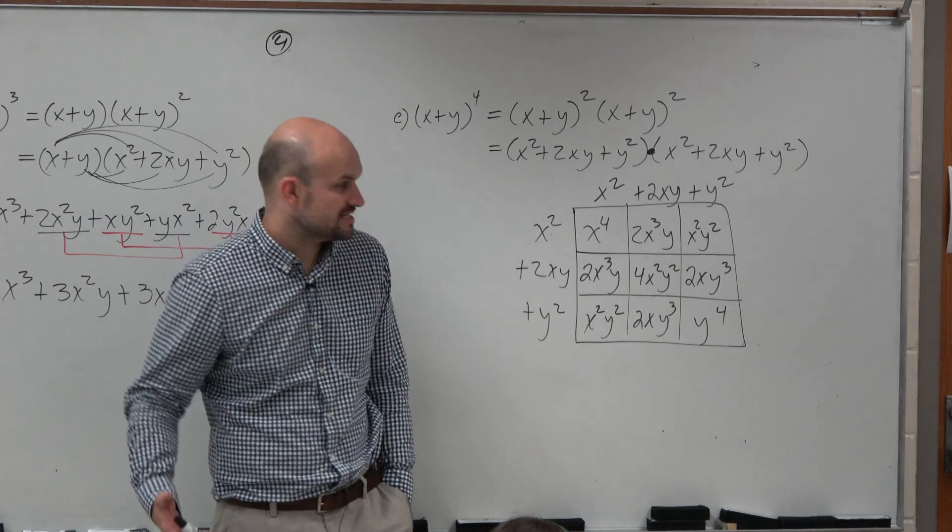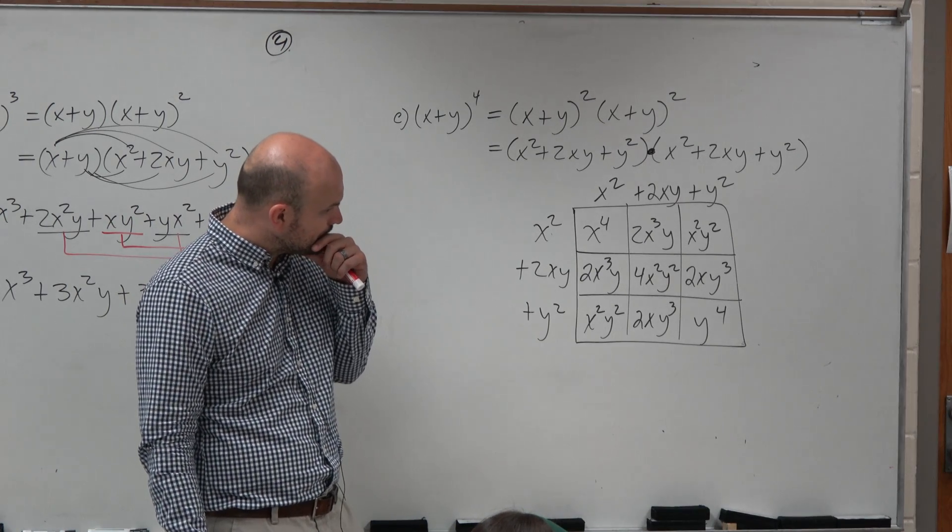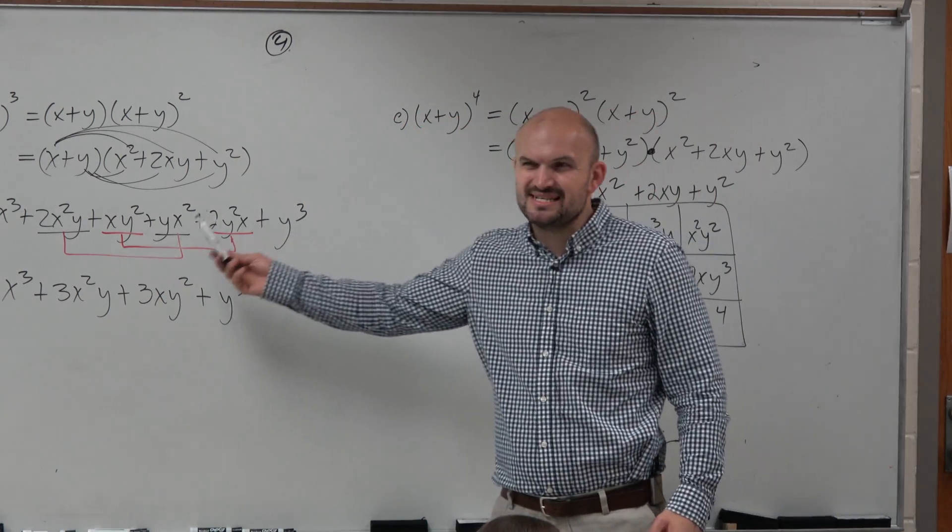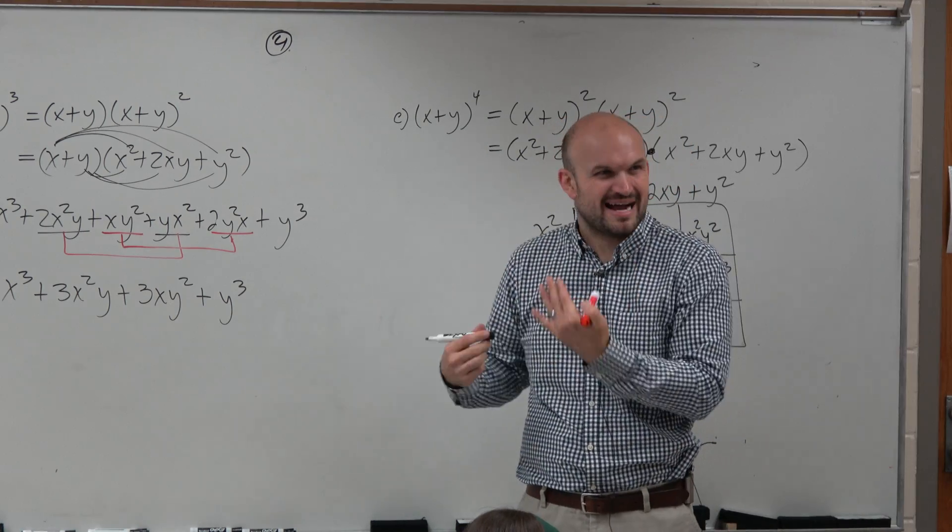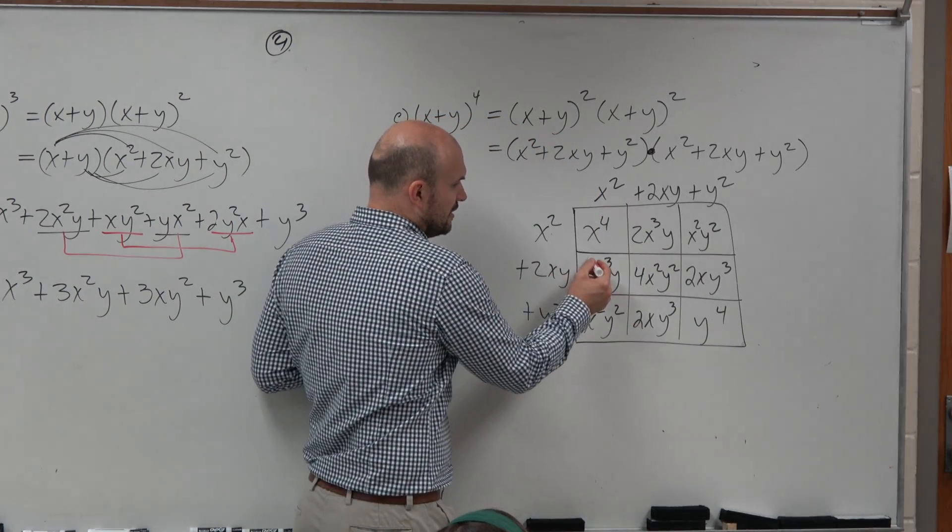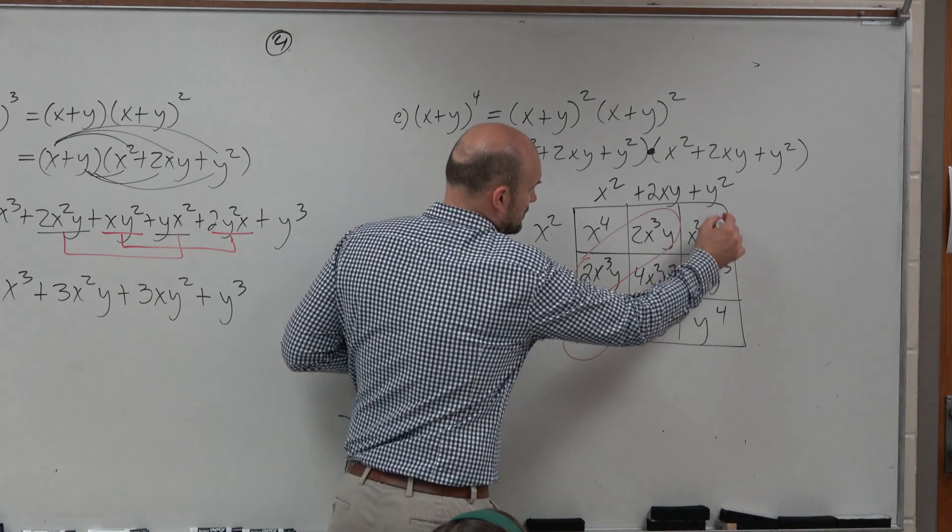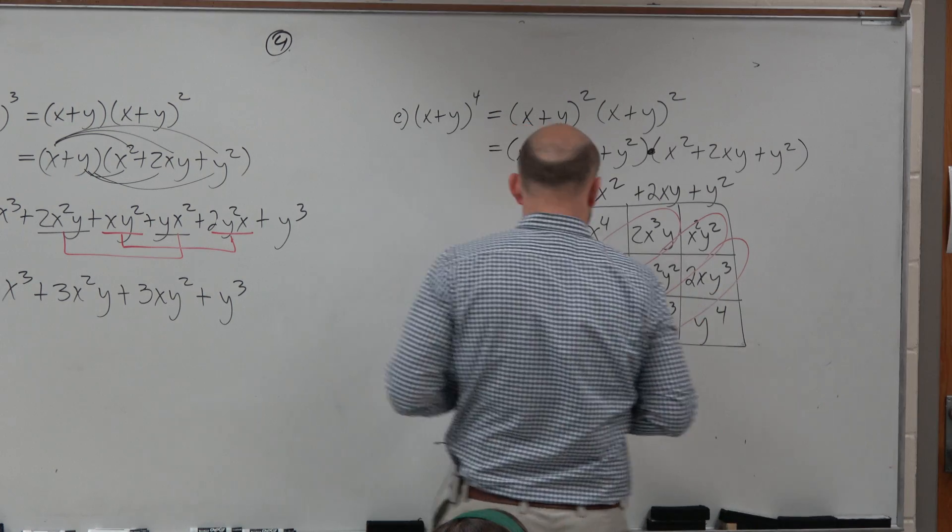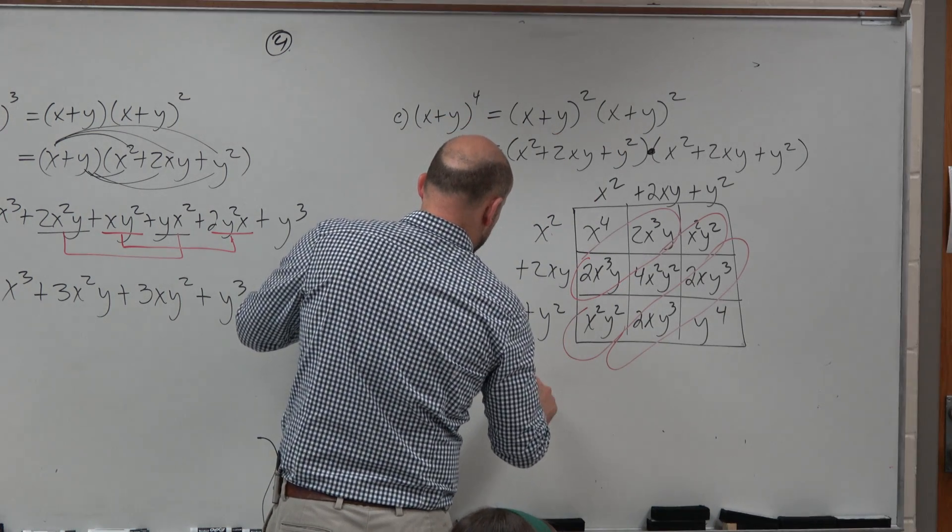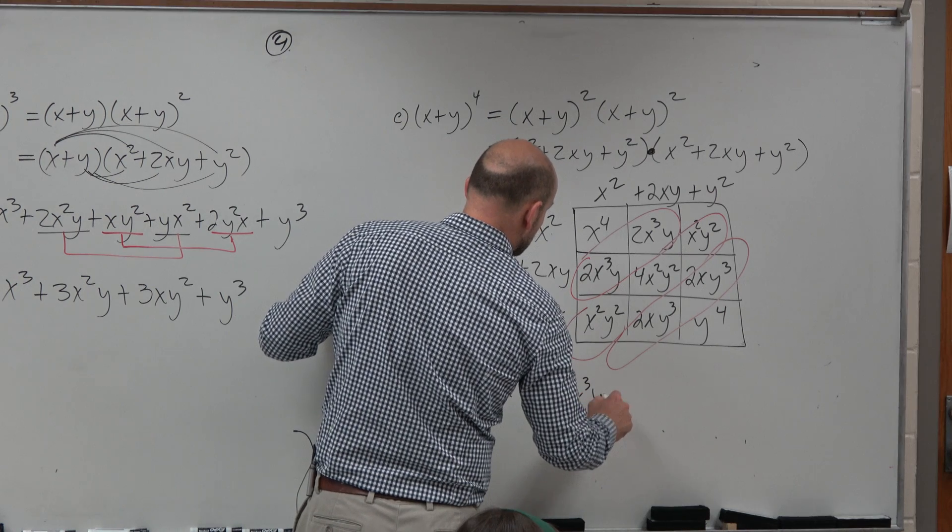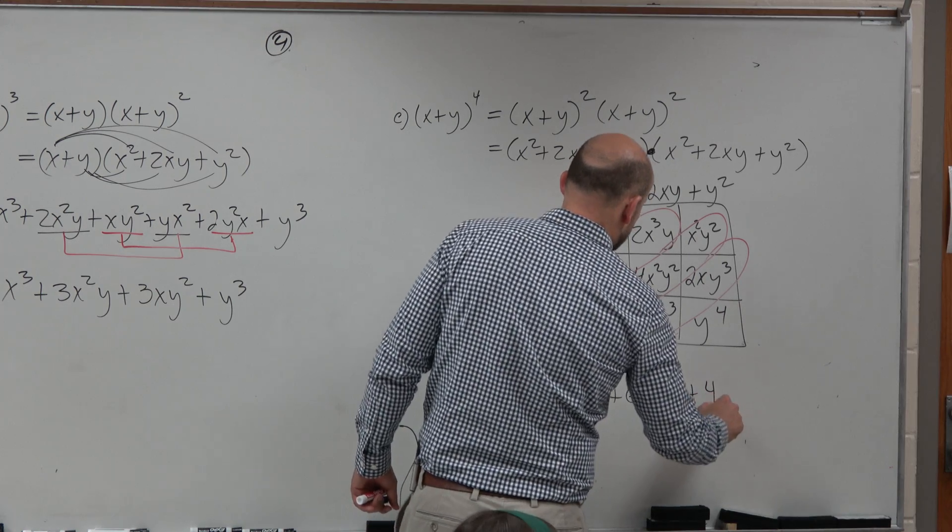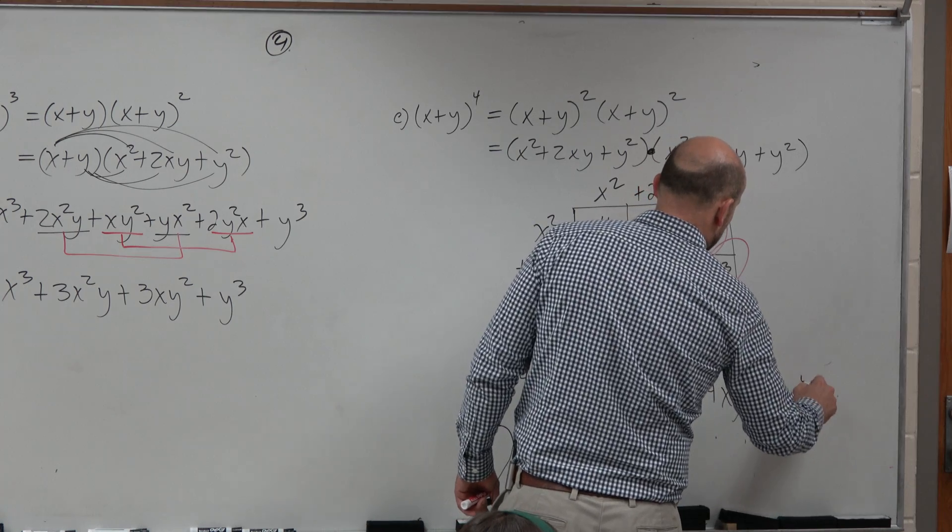Now, here's the best part I like. The best part about this is over here, when we were trying to find like terms, it wasn't as obvious, right? They're written in different ways, and it's kind of hard to find them. You can make a mistake. The reason I like the box method, as long as you have polynomials that are in descending order, the like terms are on the diagonal. So now, for me to find my final product, I'm just going to take x to the fourth plus 4x cubed y plus 6x squared y squared plus 4xy cubed plus y to the fourth.